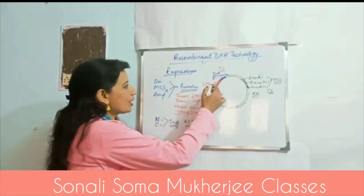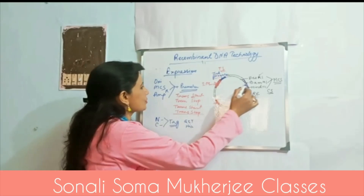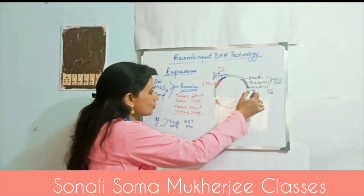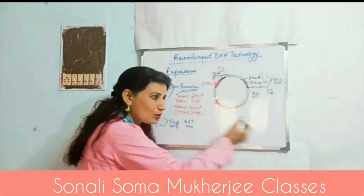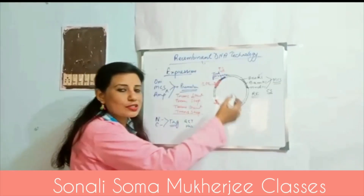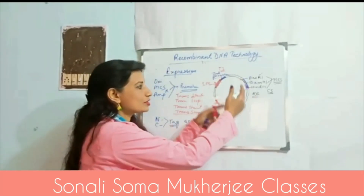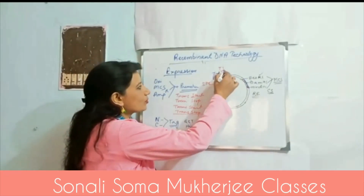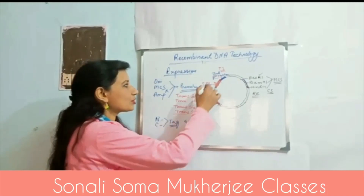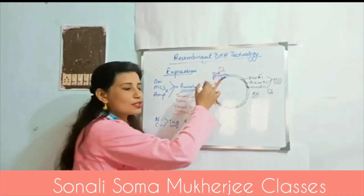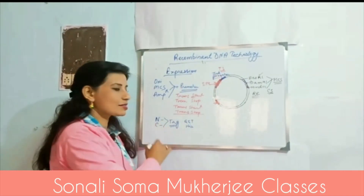So we have talked about: origin of replication, restriction enzyme endonuclease site, and selectable marker for cloning vectors. For expression vectors, along with these three requirements, what we additionally need is an inducible promoter region where transcription will start, and tags.